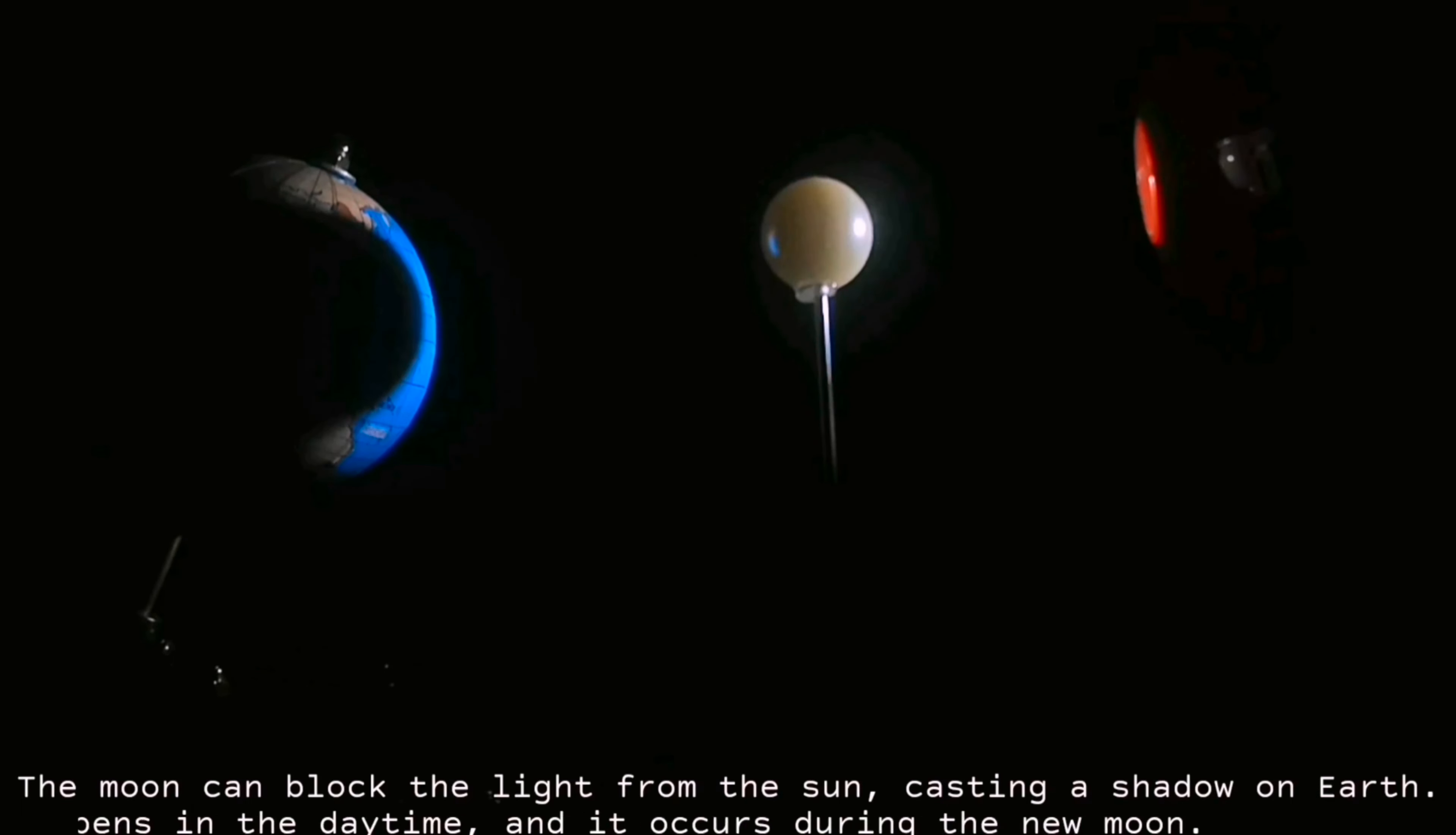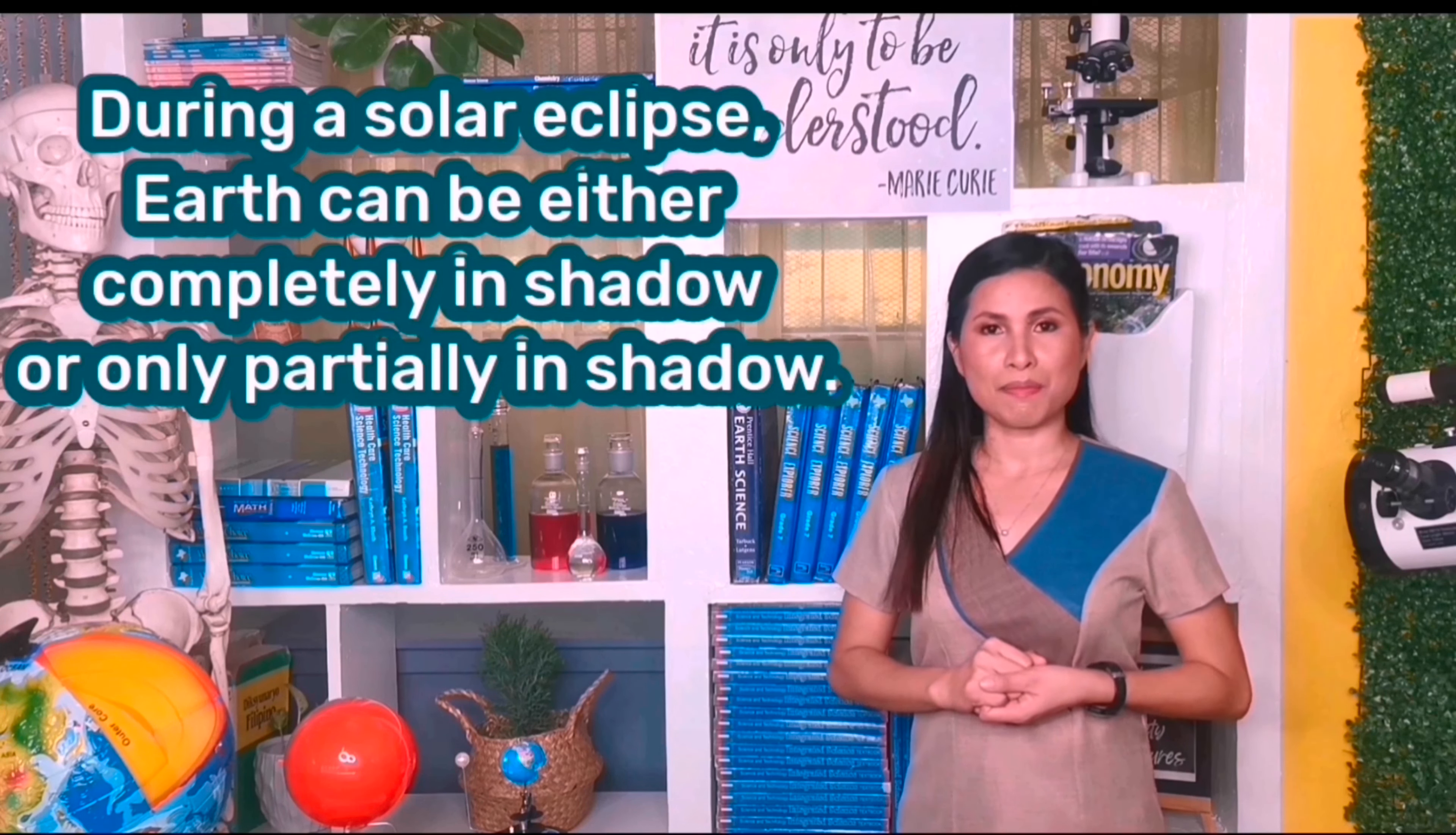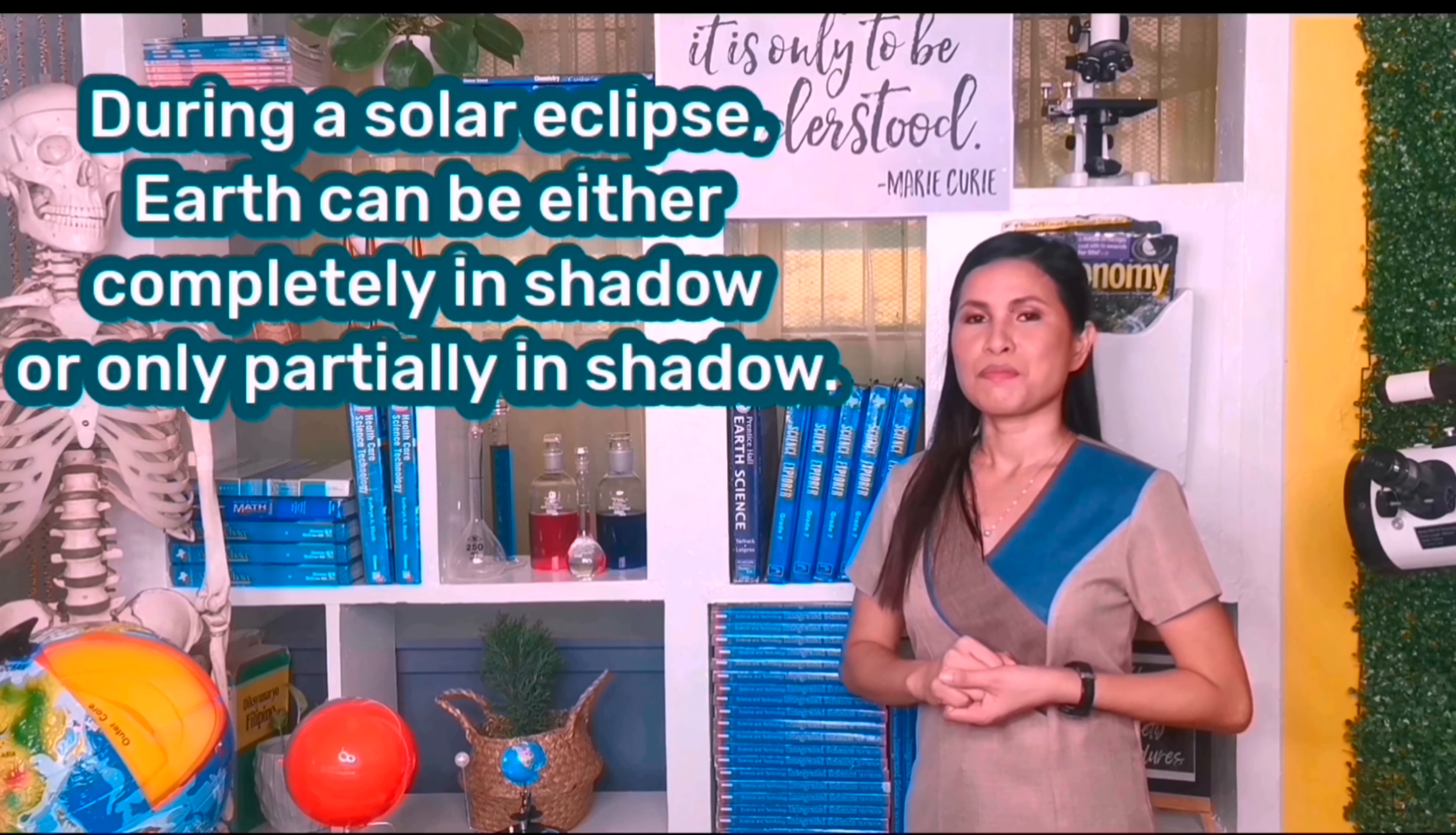In this position, the moon blocks the light from the sun, casting a shadow on Earth. This happens in the daytime and of course during the new moon.